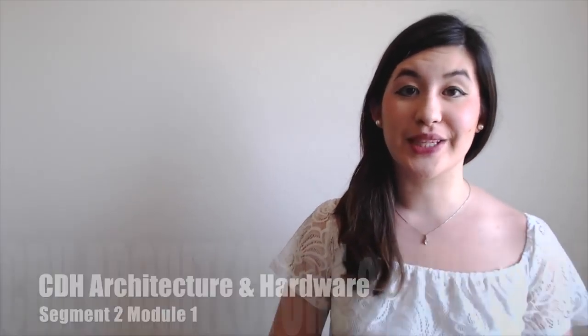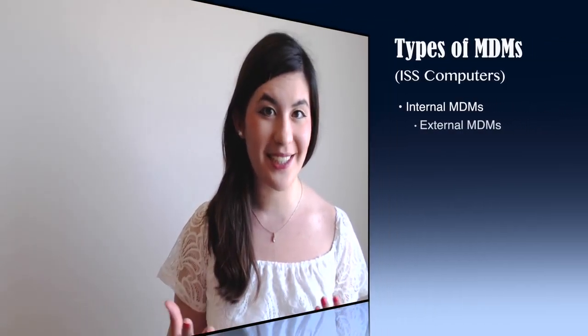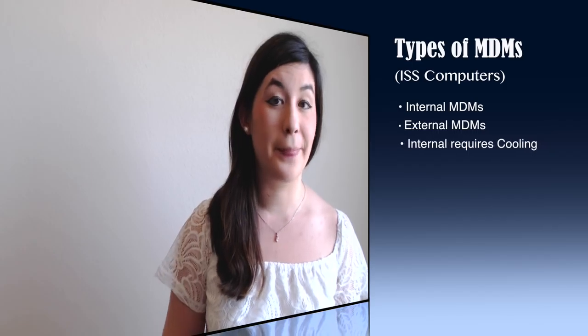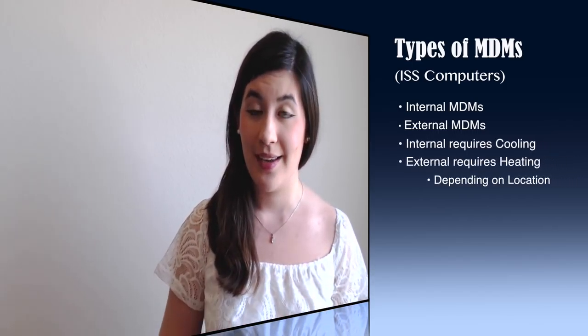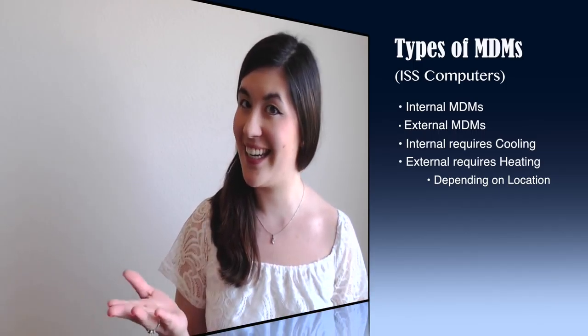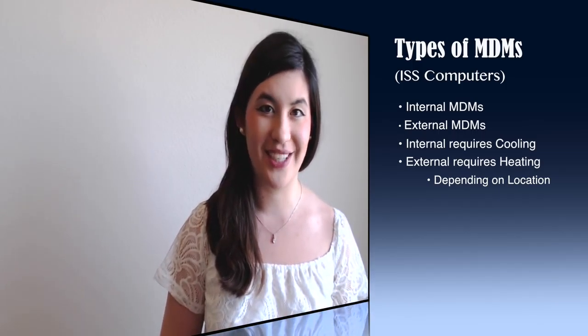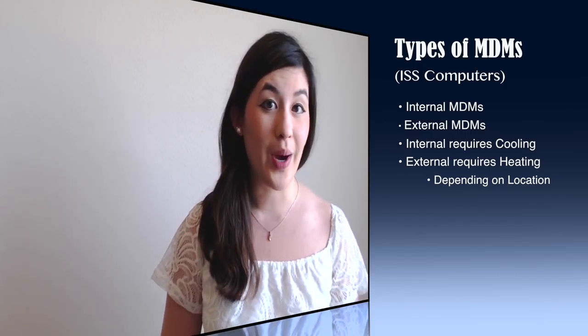One of the first things we learned was the different types and classifications of MDMs. The types are just internal and external, so obviously the biggest difference is location. The internal MDMs sit on a cold plate for cooling, while the external MDMs interface with a heatsink or heating — though depending on the location of an external MDM, they may require more heaters while others don't.